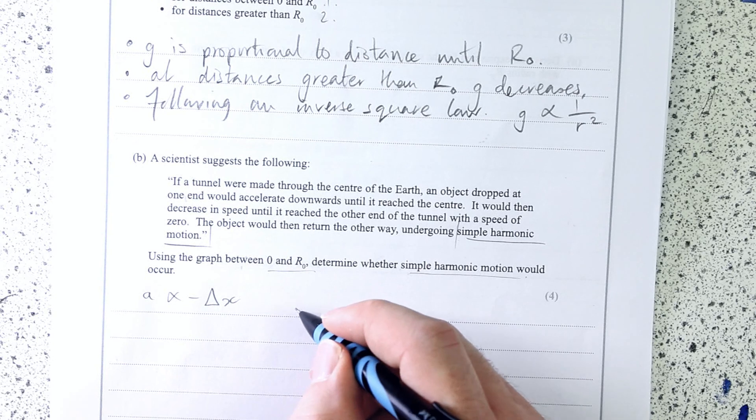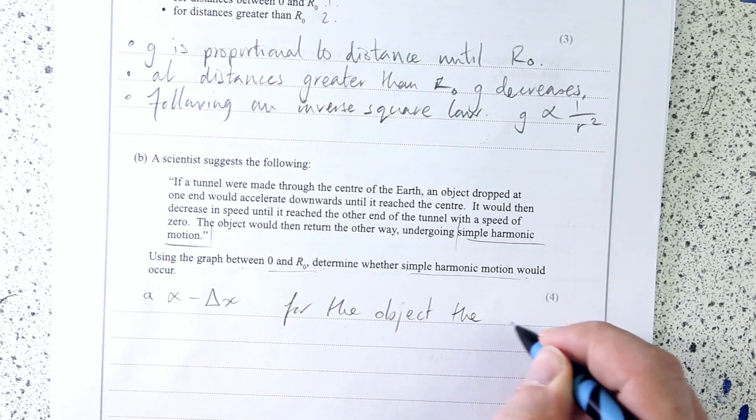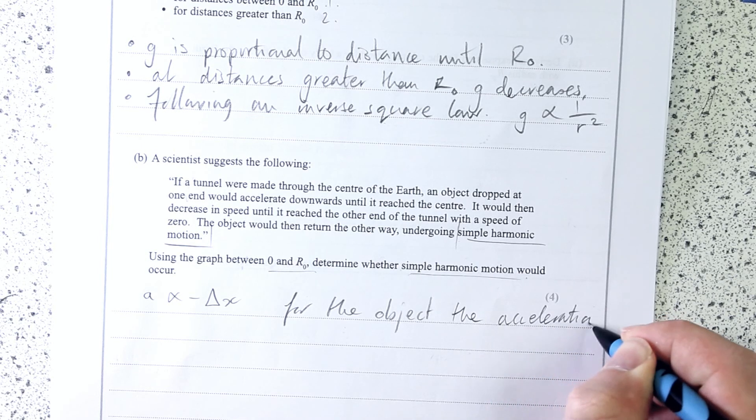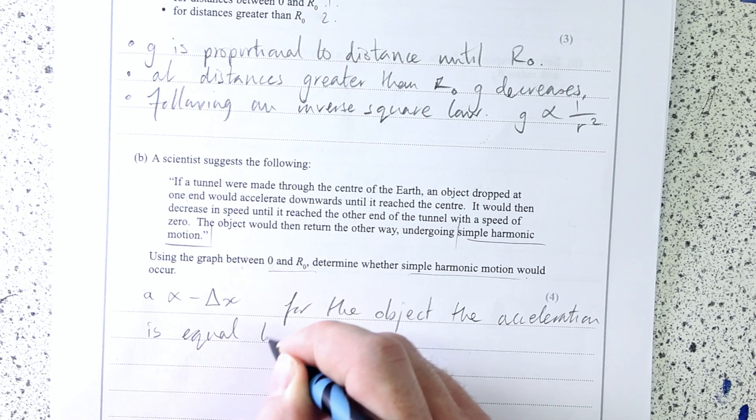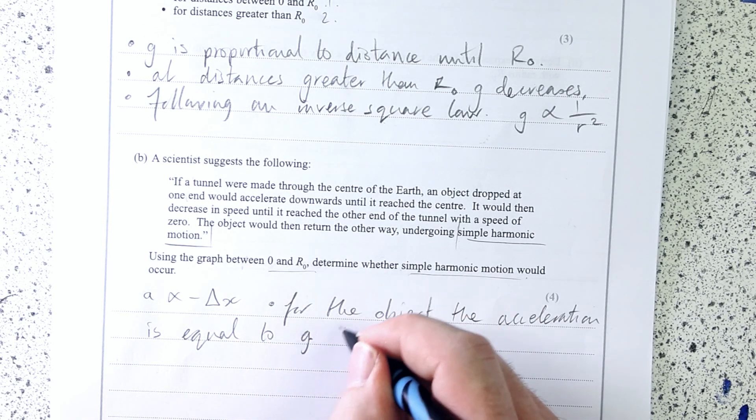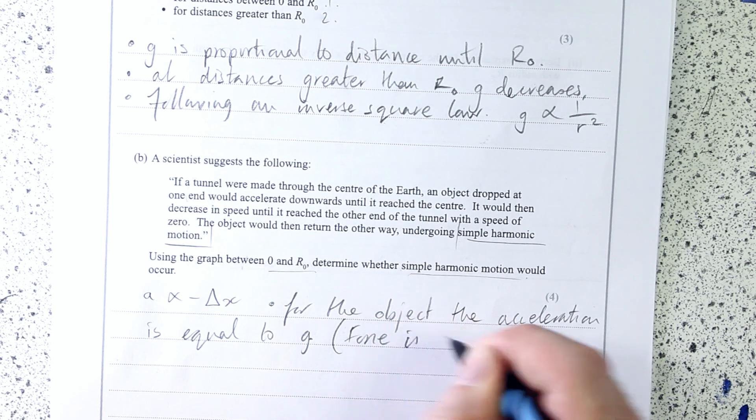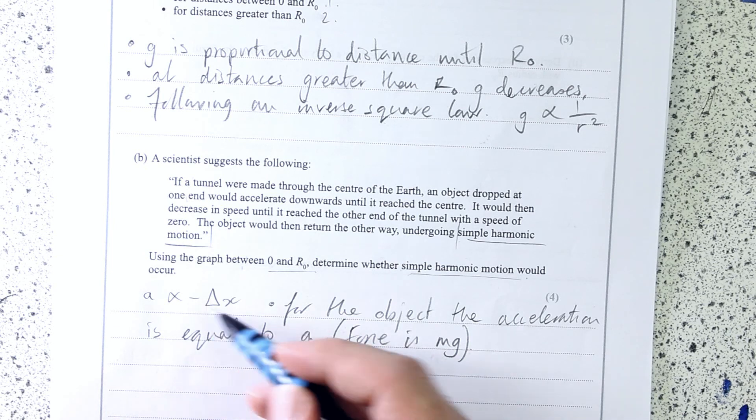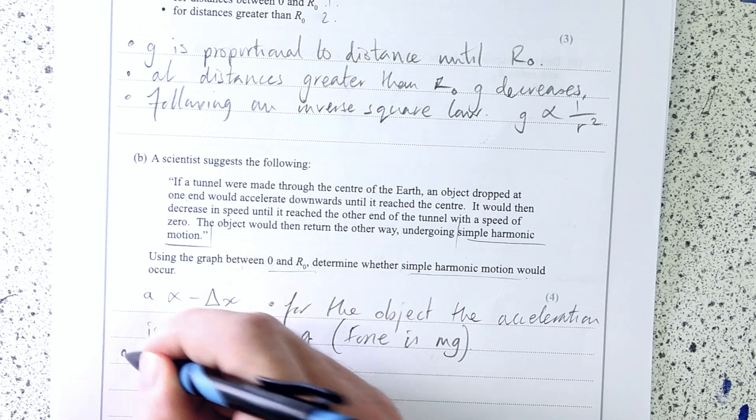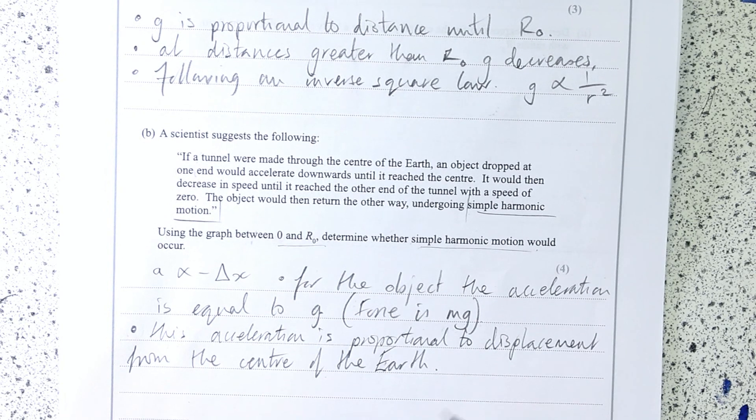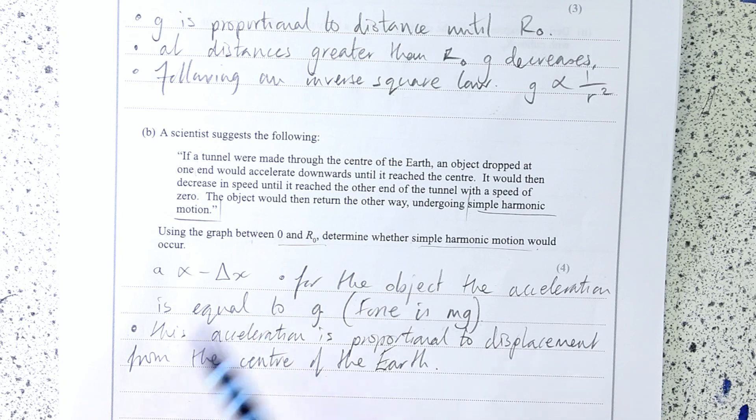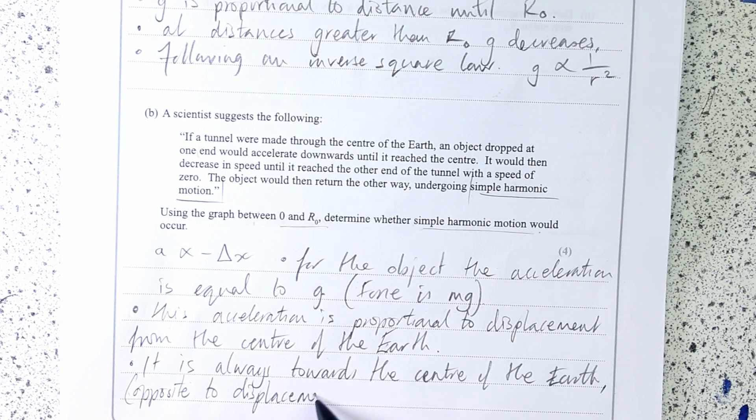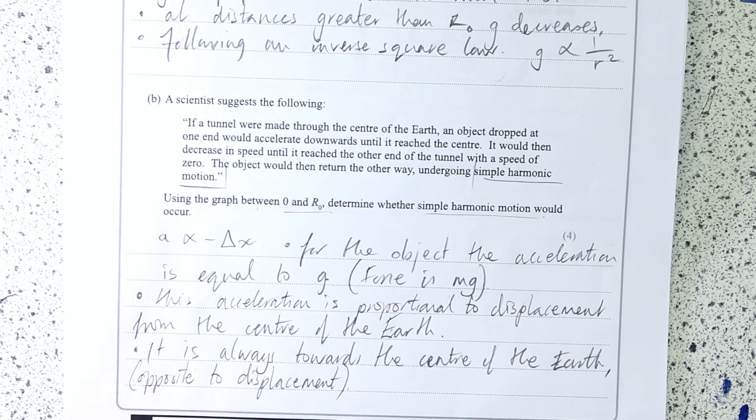The first mark is just for getting the statement that for the object, the acceleration is equal to g. That's the first point where you could say the force is mg. That's like a restoring force, if you like. It's always towards that centre point. This force is proportional to the displacement from the centre of the Earth. And it's always towards the centre of the Earth, or it's always opposite direction to the displacement. This is just a few laws where the negative is a really important component of it. So therefore, a is proportional to minus delta x, so SHM.